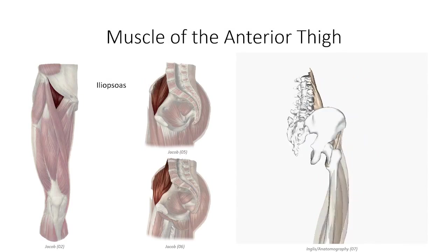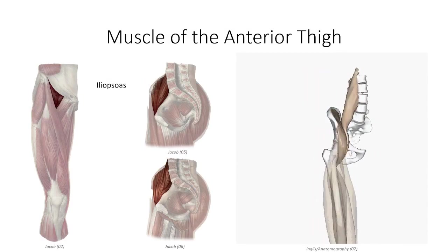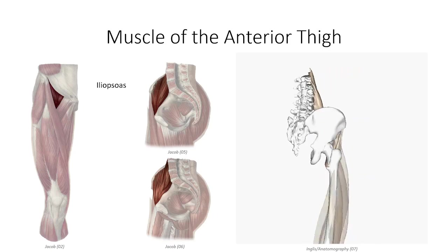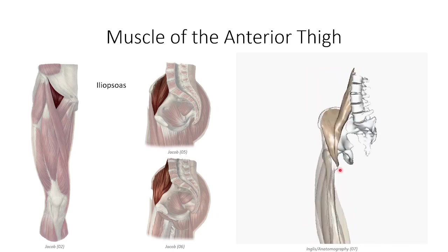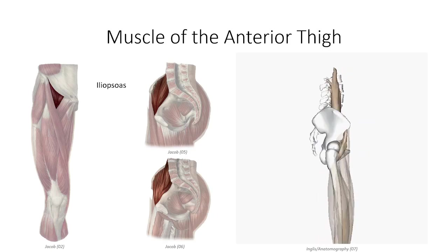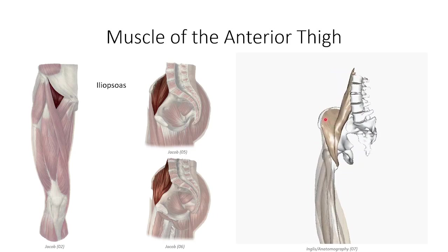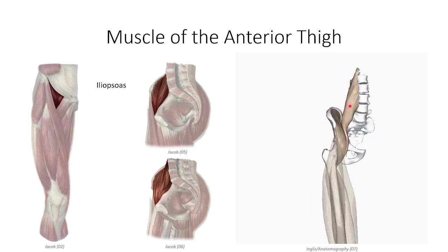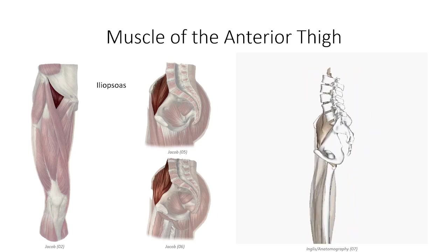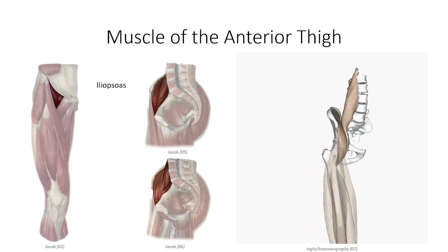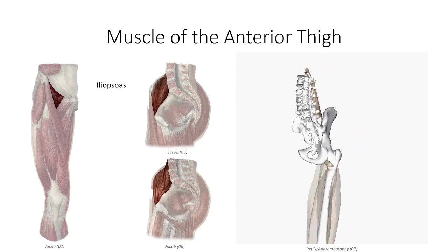Although not exactly part of the anterior compartment, this is a good time to introduce the iliopsoas muscle, as you will encounter its distal-most portion where it inserts on the lesser trochanter of the femur. It is actually a fusion of two separate muscles: the iliacus laterally, which originates off the medial surface of the ilium, and the psoas major muscle medially, which originates off the transverse processes of the lumbar vertebrae. The muscle passes anterior to the hip and is the principal flexor of the hip.